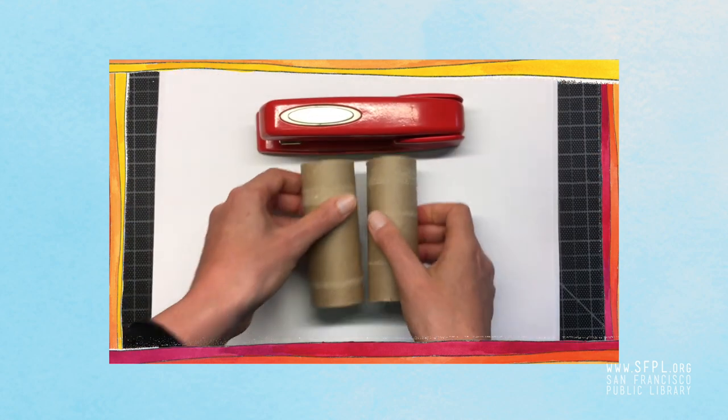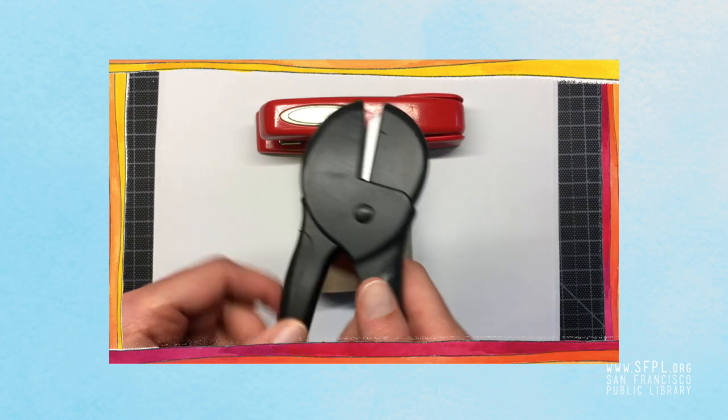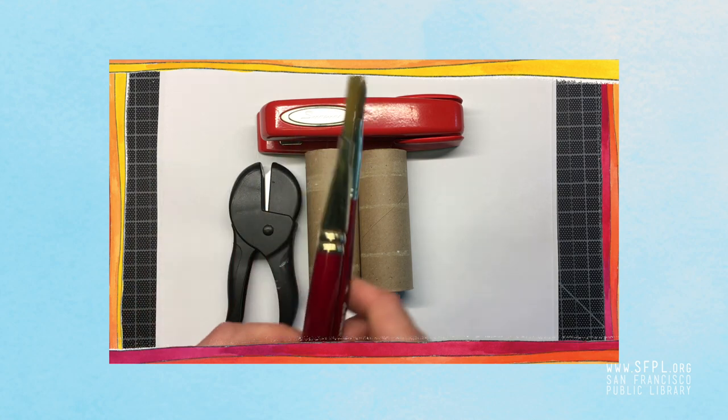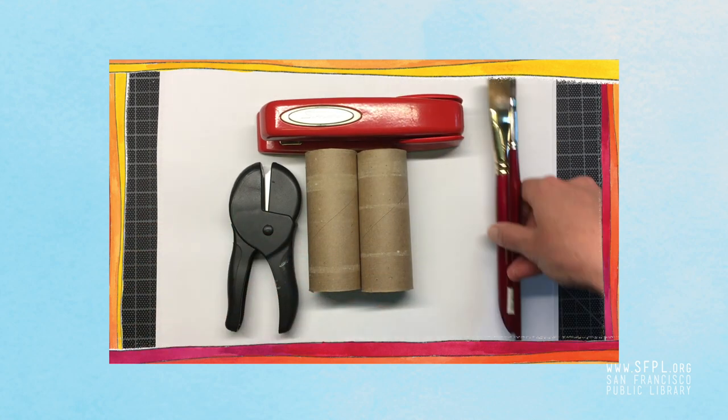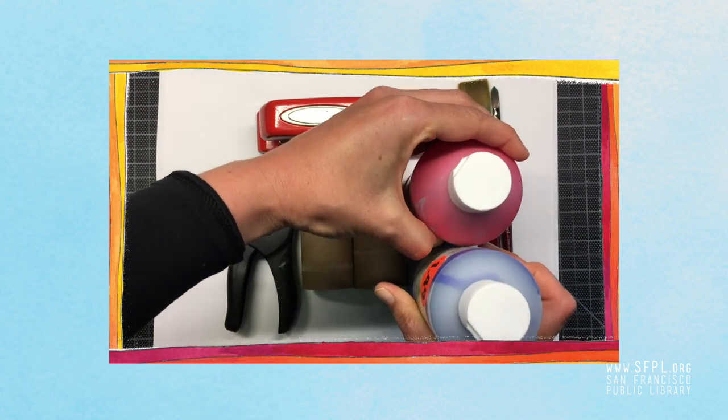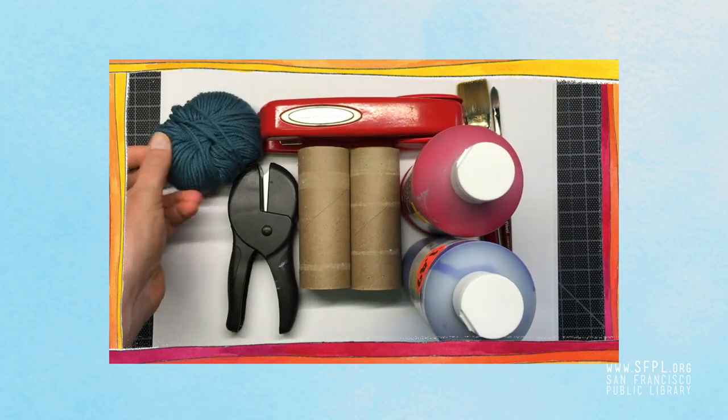You'll need a stapler, two toilet paper rolls, a hole punch, a paintbrush or two, whatever color paint you want, and yarn or string.